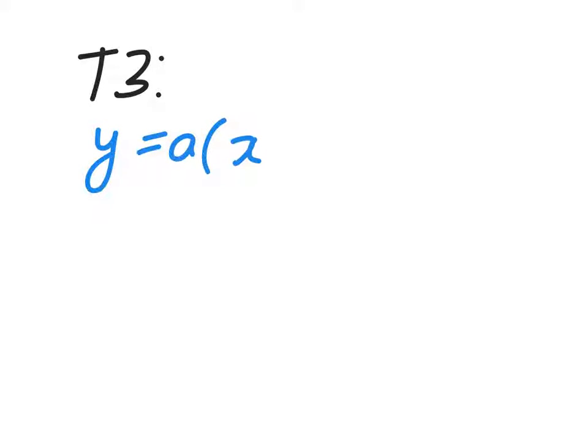Task 3. In task 3, we're given a parabola and asked to write the equation in vertex form. That should be pretty easy because if we look at the graph, we can see the coordinates of the vertex, which is (minus 2, 8). So we're going to fill it in: y equals a times x plus 2 squared plus 8. The reason we have plus 2 is because h is minus 2, so minus h is plus 2. We also have two other points on the graph we can use to find a — for example, the x-intercept at (2, 0).